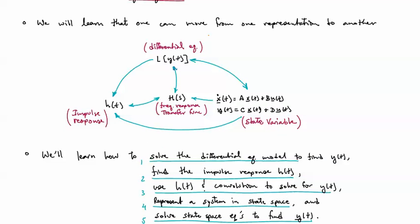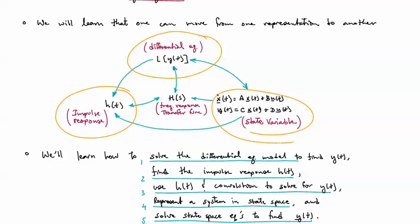A linear time invariant system can be described in three different time domain representations. The first is the differential equation. The second is the impulse response, and then using convolution to predict the response of the system using the impulse response and a given input. The third is the state variable representation.